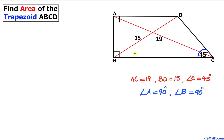Welcome to Pre-Math. In this video tutorial we have a trapezoid ABCD such that diagonal AC is 19, diagonal BD is 15, angle C is 45 degrees, and angles A and B are right angles. We are going to calculate the area of this trapezoid ABCD.